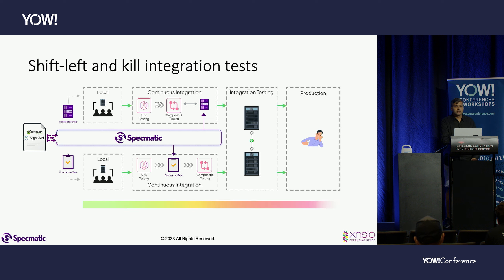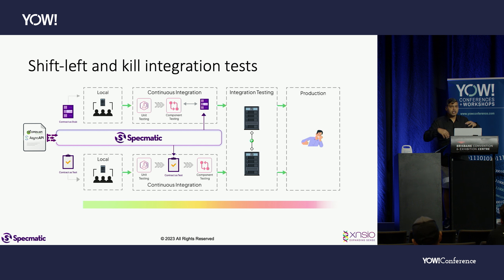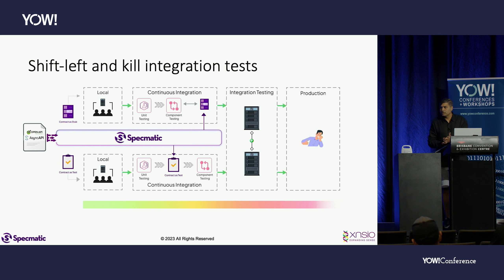This is what truly allows you to independently develop and deploy services. You no longer have to bring everything to an integrated environment, test everything together, and then proceed — because then you lose the entire benefit of microservices. By figuring out integration issues as early as possible in the cycle, your path to production becomes clean.